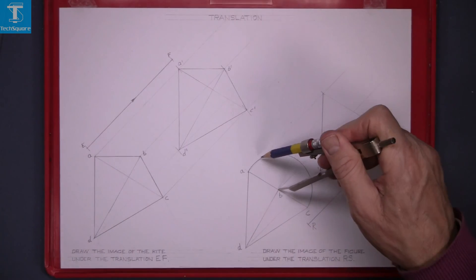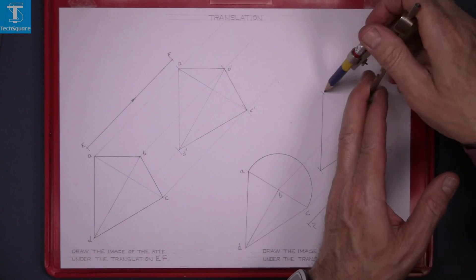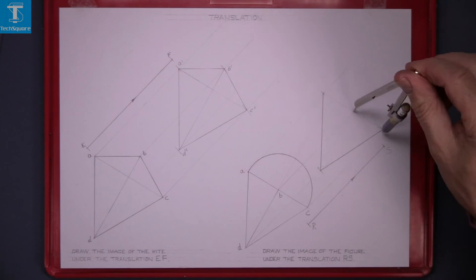Set the compass to the radius of the circle. Put the pointer compass in the new center and draw the circle.